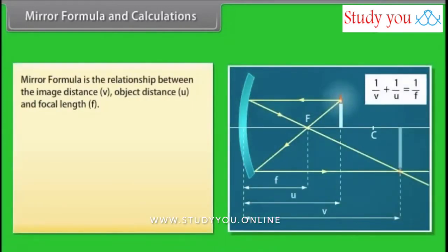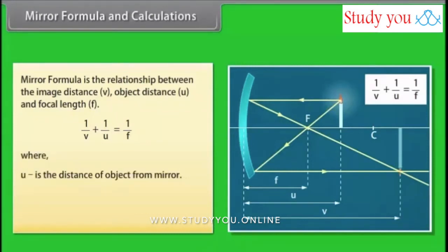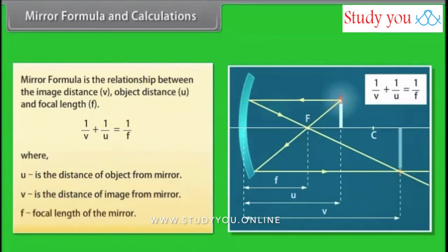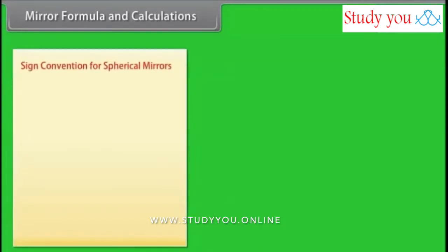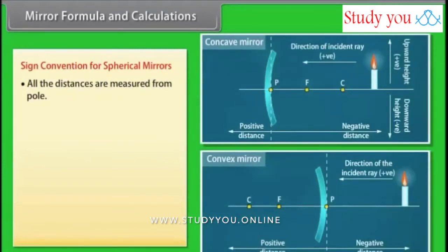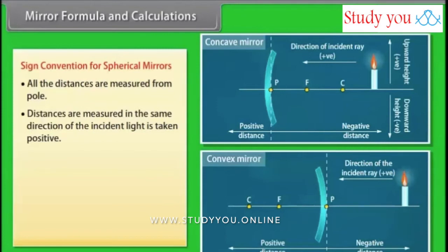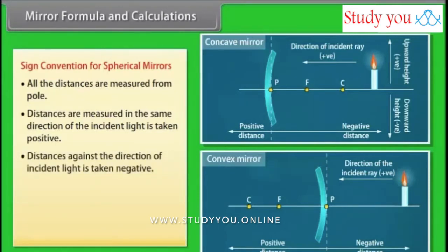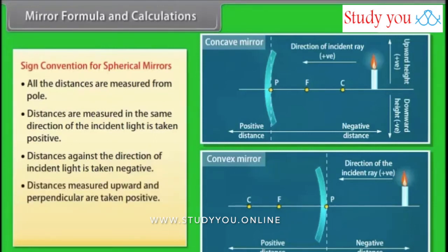The mirror formula is the relationship between the image distance, object distance, and focal length. Sign convention for spherical mirrors: all distances are measured from the pole. Distances in the same direction as the incident light are taken as positive, and distances against the direction of incident light are taken as negative. Distances measured upward and perpendicular are positive; distances measured downward and perpendicular are negative.